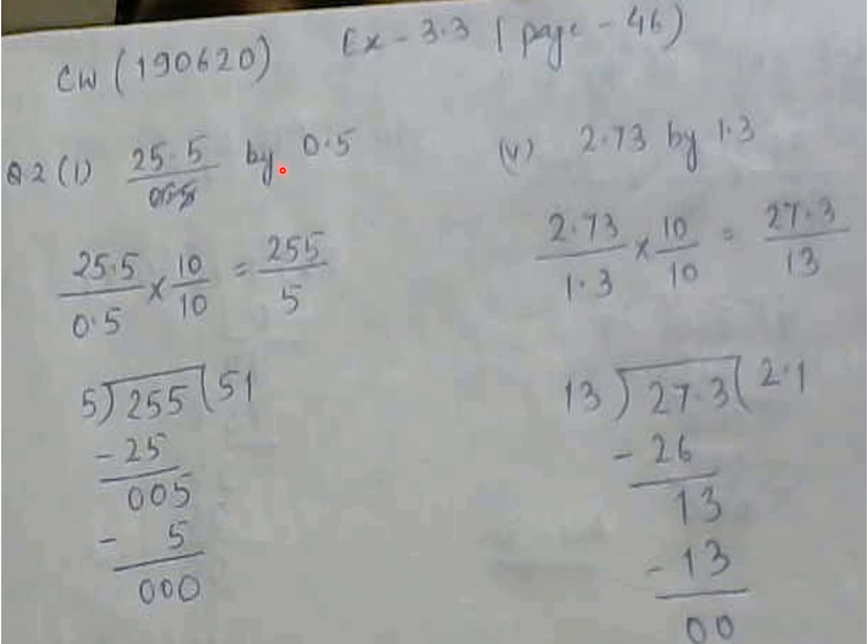So as I told you, the target is to make the divisor or the denominator to a whole number. 0.5 into 10 will give me 5. When I will multiply 10 down, I will multiply 10 up. So the new number will be 255 and 5. When you will divide you will get the answer as 51.